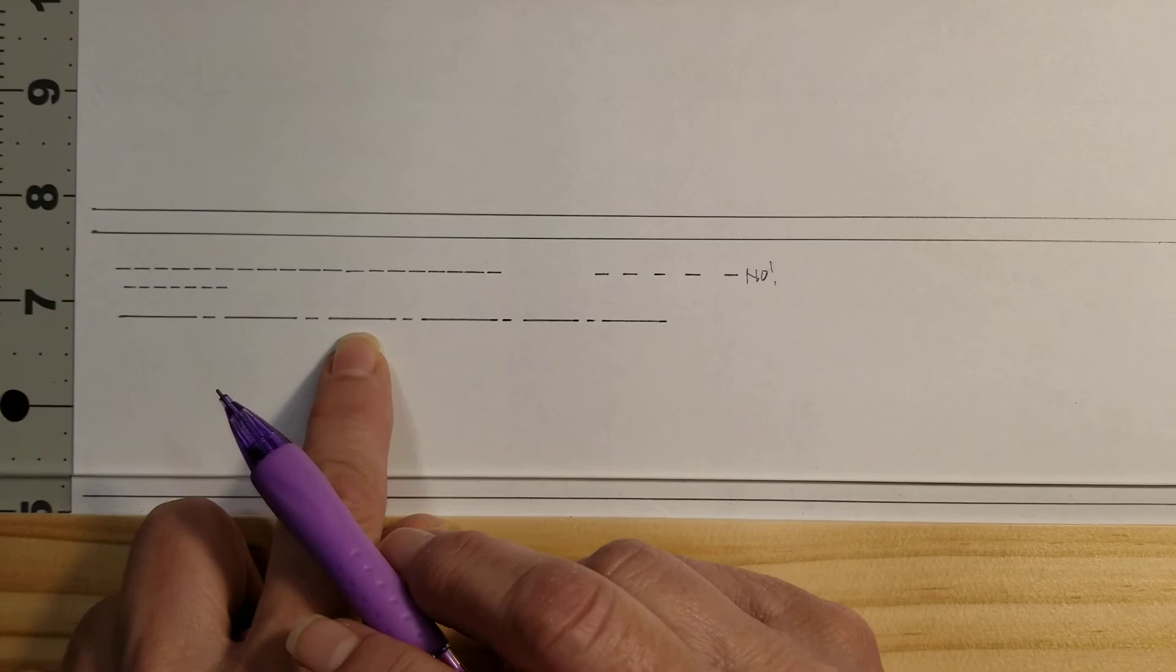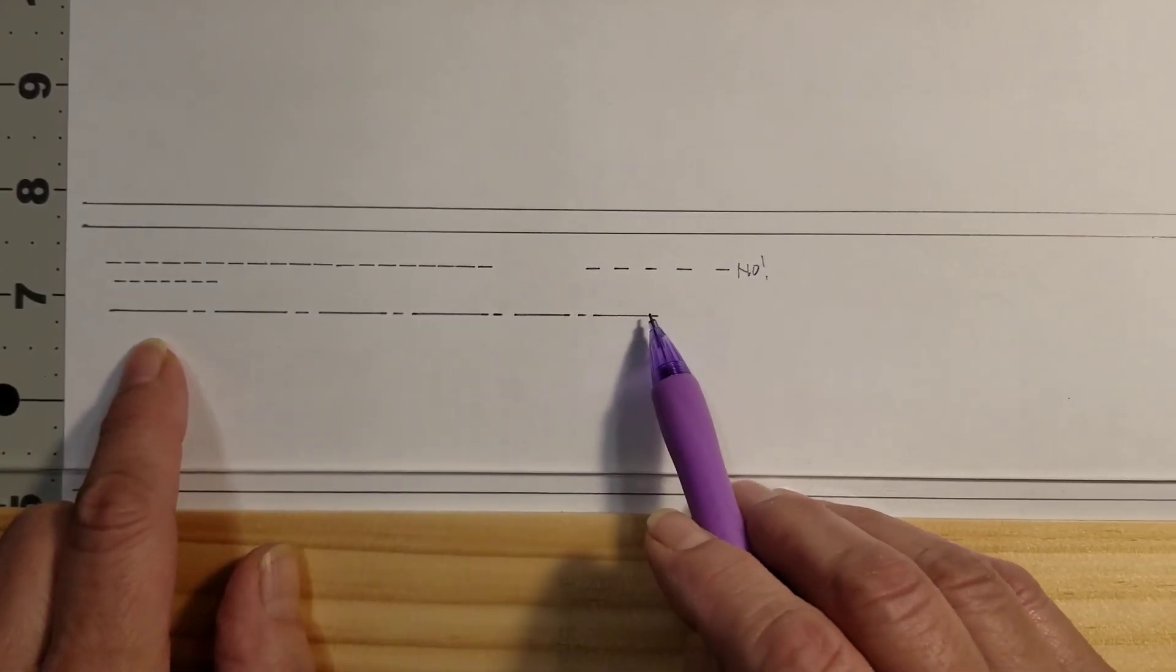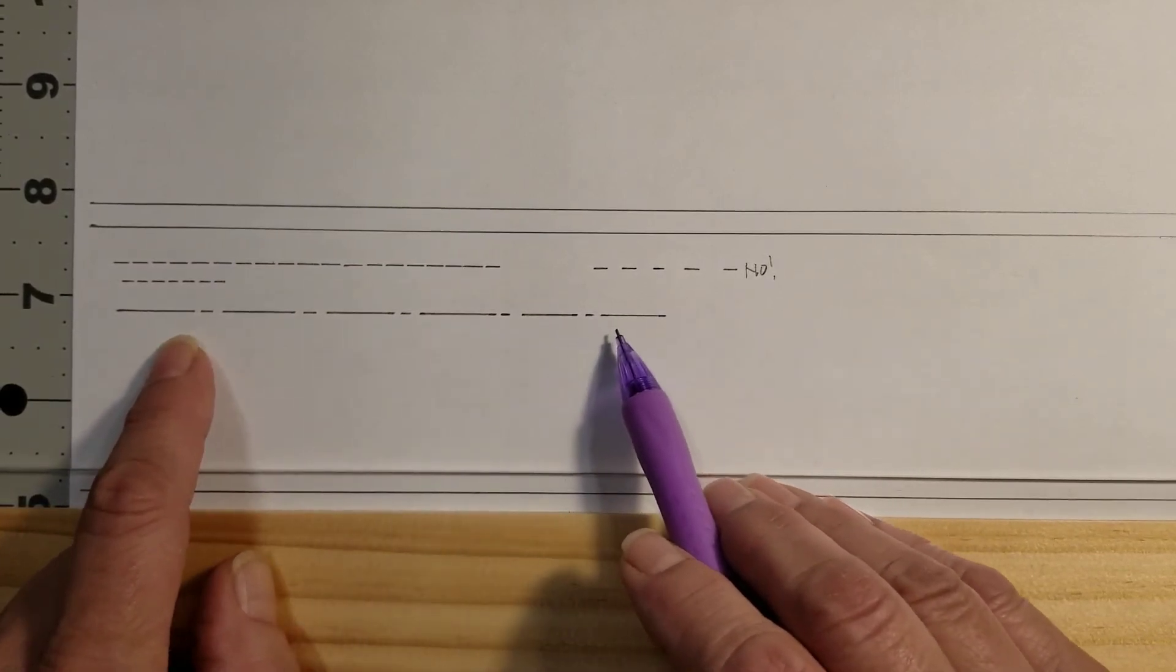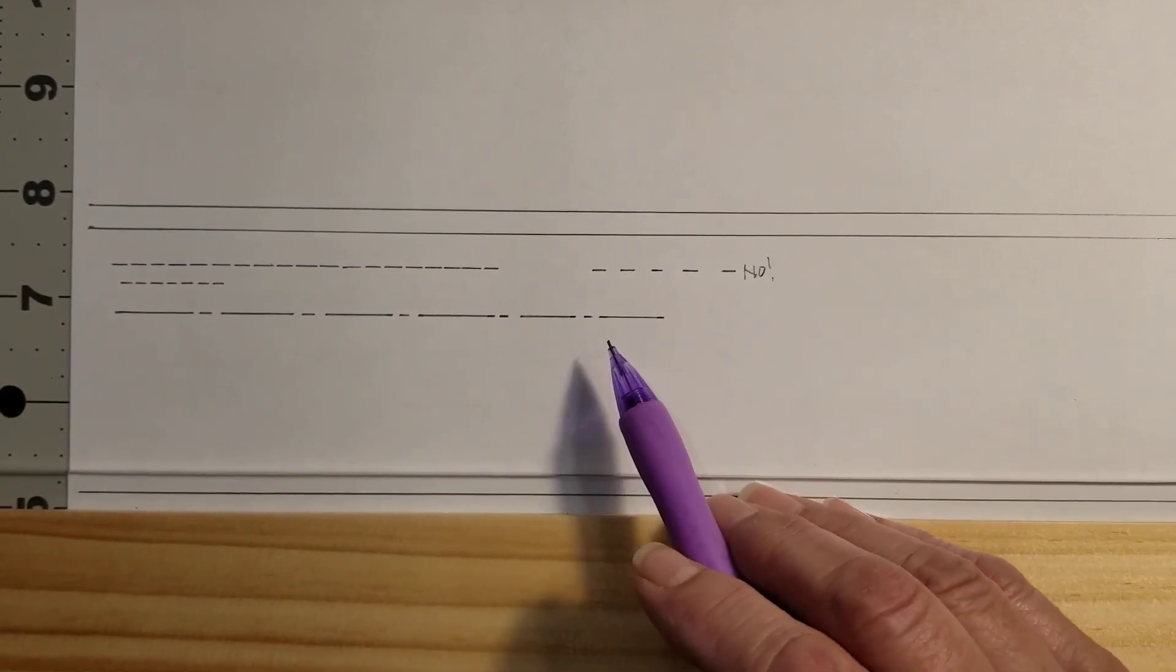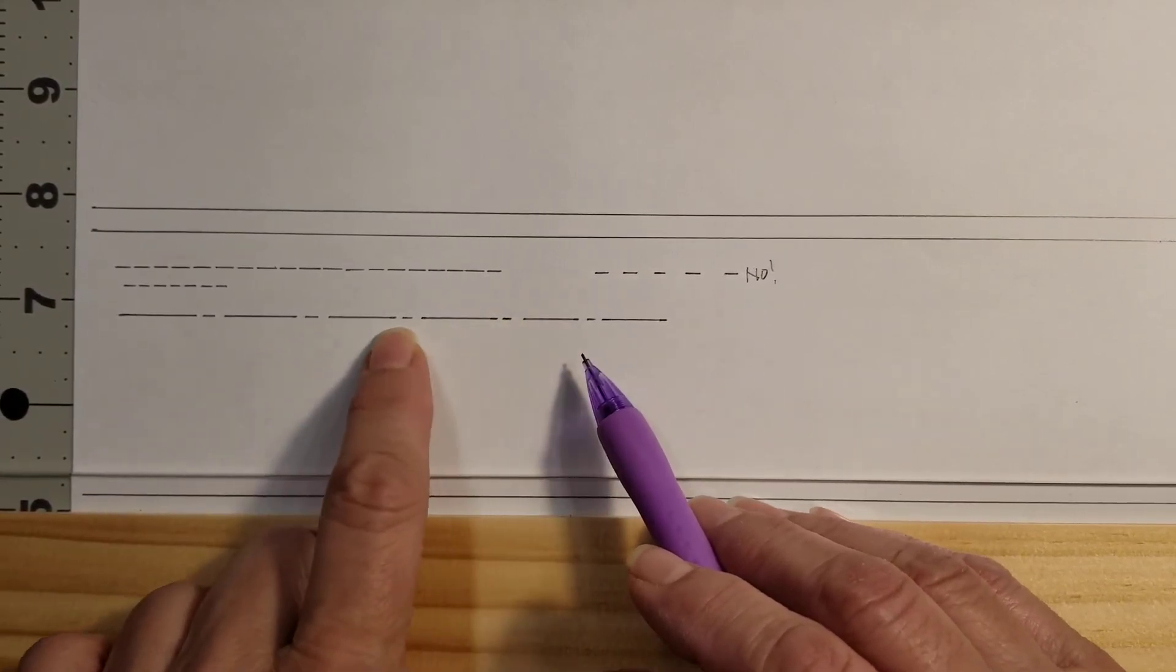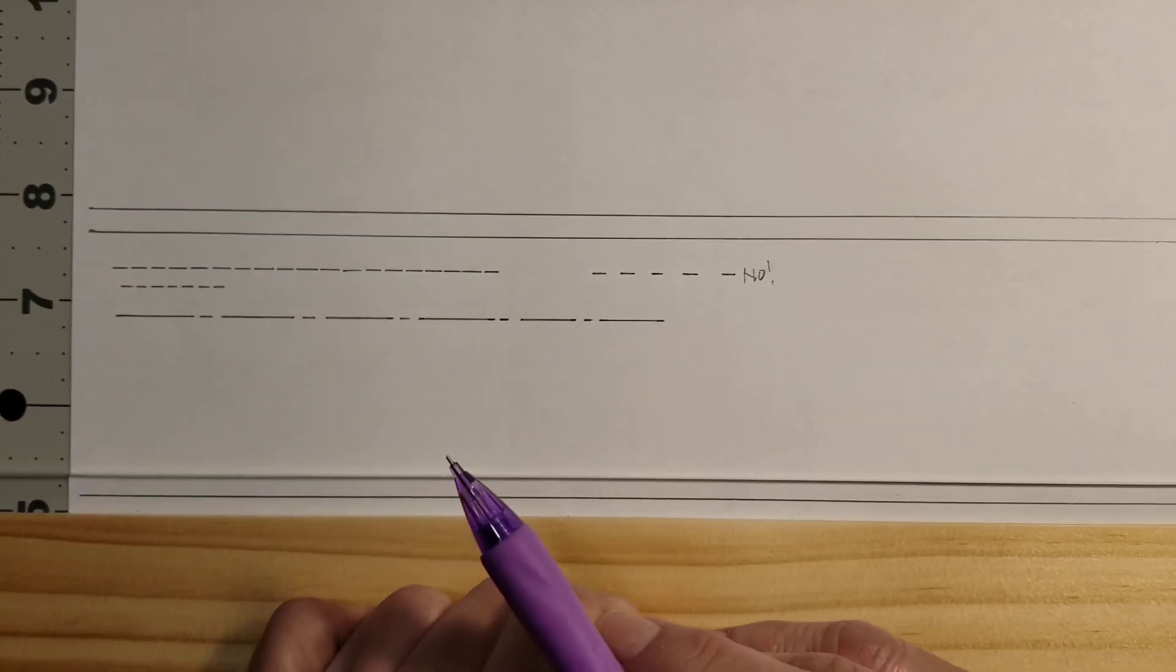But notice that my long lines are approximately the same length. My short lines are approximately the same length, although they're not. This one got a little lazy. And that I have some space in between so you can clearly read that that is a broken line.